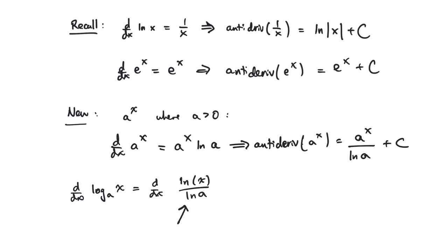We just used the change of base law, and the natural log of a is a constant, so this would just be 1 over the natural log of a times the derivative of the natural log of x, which by what we set up above was just 1 over x.